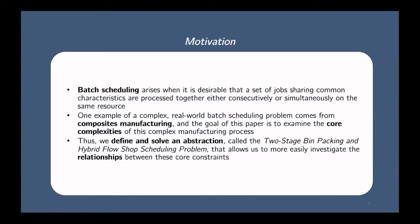One example of a complex real-world batch scheduling problem comes from the area of composites manufacturing. The goal of this paper is to examine the core complexities of this manufacturing process. To do that, we define and solve an abstraction which we call the two-stage bin packing and hybrid flow shop scheduling problem, which allows us to more easily investigate the relationships between these core constraints.